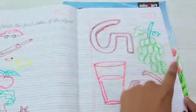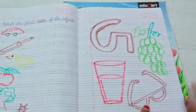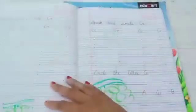Now speak G for grapes. G for glass. And G for glasses. Now open page number 30.